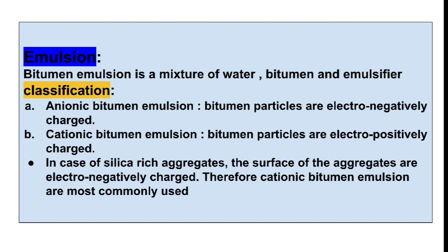We classify emulsion as anionic bitumen emulsion and cationic bitumen emulsion. In anionic bitumen emulsion, bitumen particles are electronegatively charged. In cationic bitumen emulsion, bitumen particles are electropositively charged.